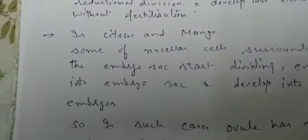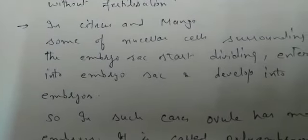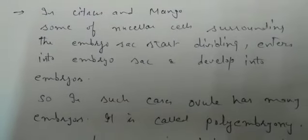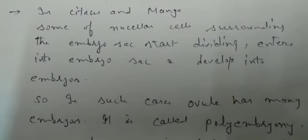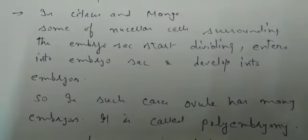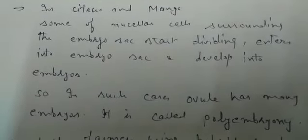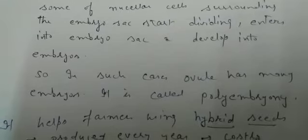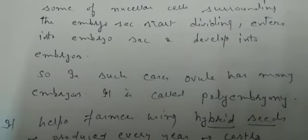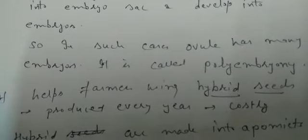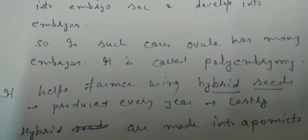Because so many nucellus cells are entering into the embryo sac, a large number of embryos are formed — not just one. So in this case, when more than one embryo is produced in a single ovule, we call it polyembryony.